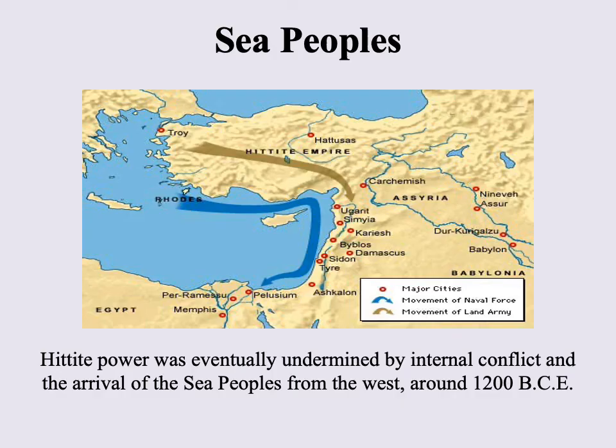That brings us to the end of the Hittites and the end of this lecture. The Sea Peoples featured prominently in the Hittites' decline, along with issues of internal conflict, such that the Hittites went into a very rapid decline starting around 1200 BCE. The follow-up, Ancient Civilizations 2, will correspond to the second chapter from the textbook. Thank you for listening.